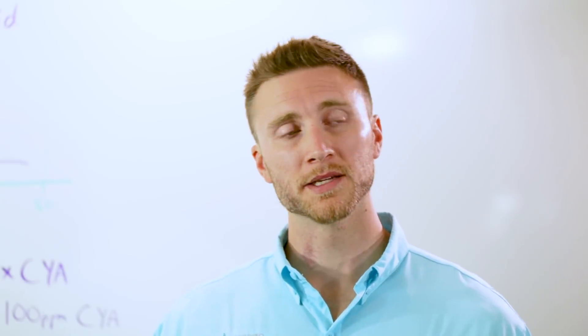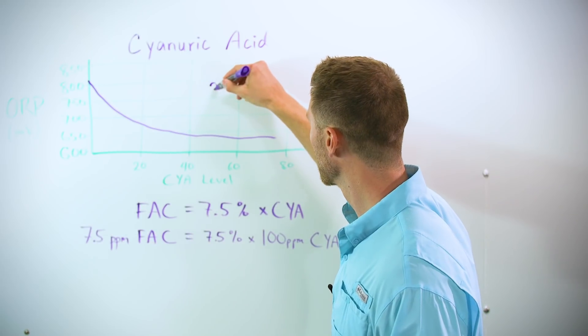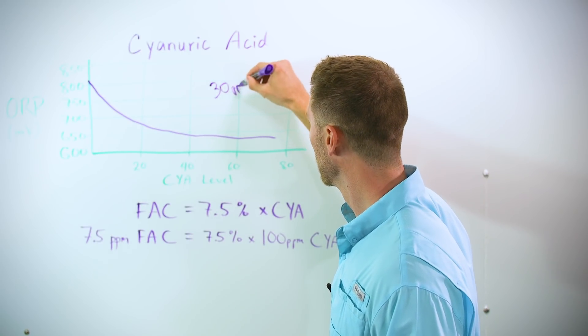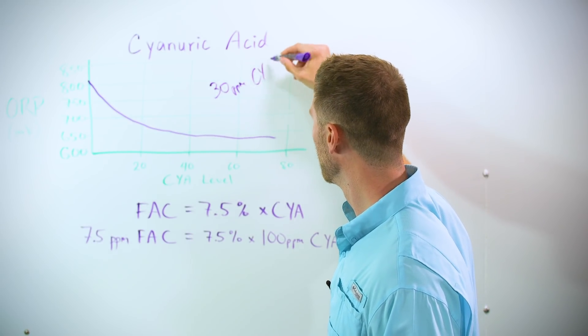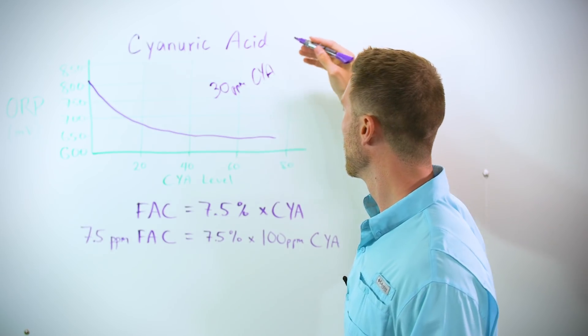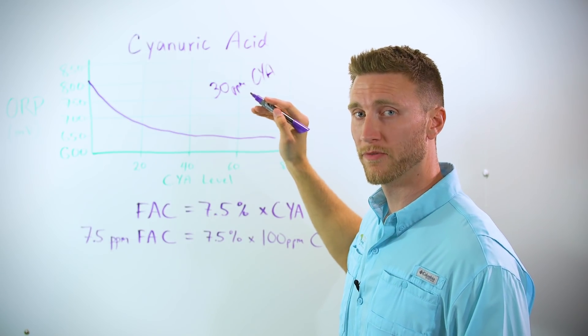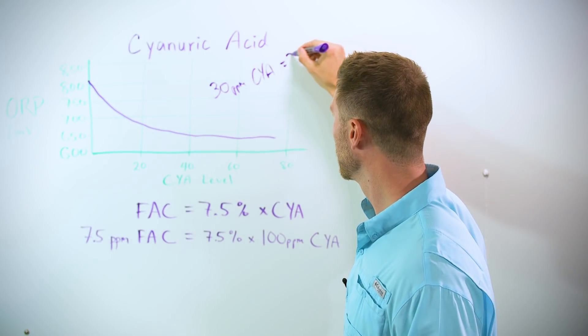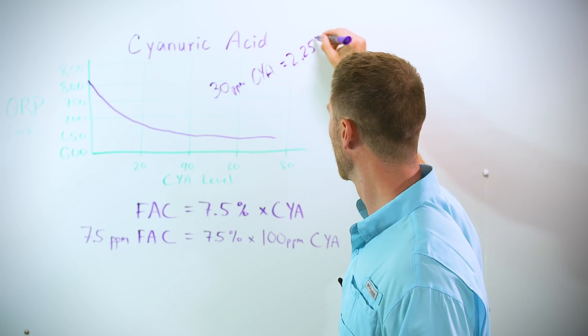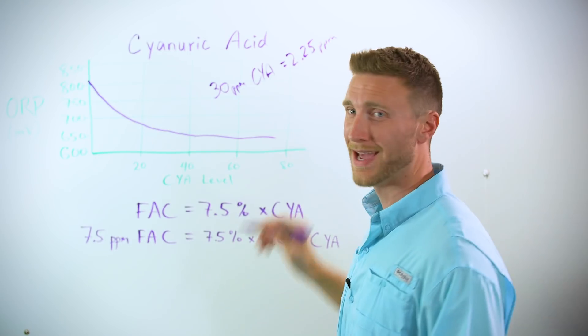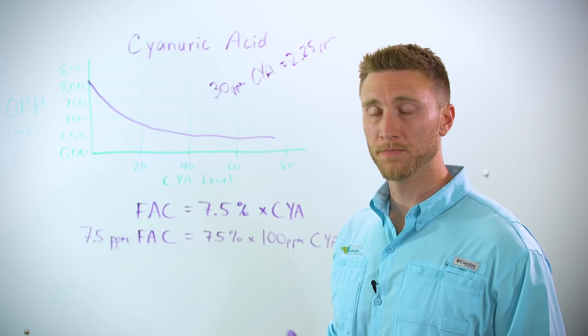We recommend not exceeding 30 parts per million of cyanuric acid. Let's do the math: 30 parts CYA times the factor of 7.5% is about 2.25 parts per million as a baseline for chlorine. That's manageable. The bottom line is to keep your cyanuric acid levels low enough so that they're manageable.